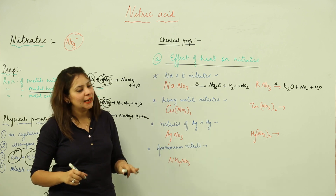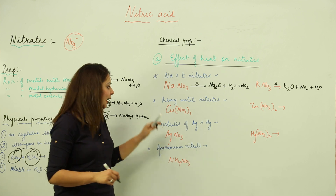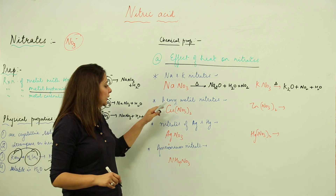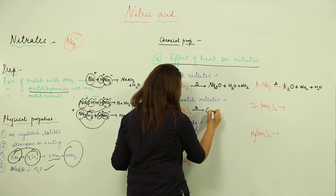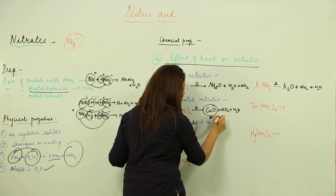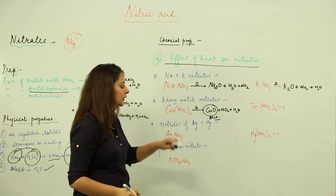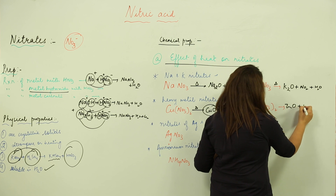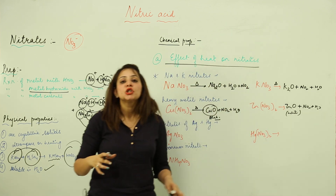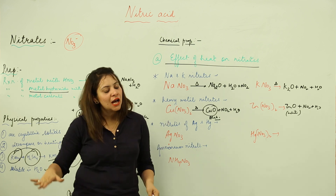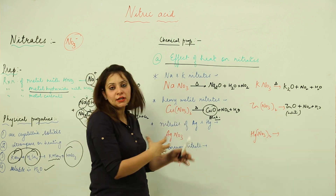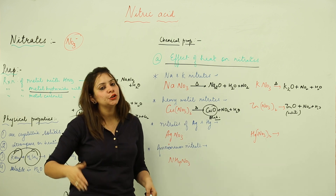For heavy metal nitrates — like copper and zinc, and all heavy metals except silver and mercury — heating gives a metal oxide, NO2, and water. Copper nitrate gives copper oxide, which is black. Zinc nitrate gives zinc oxide, which is yellow when hot but turns white on cooling. The same pattern applies to magnesium, calcium, and similar metals.